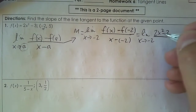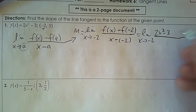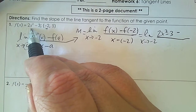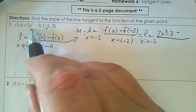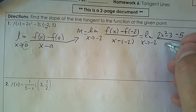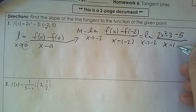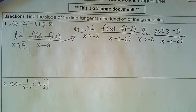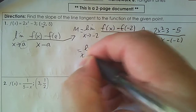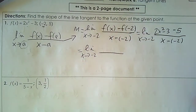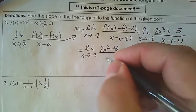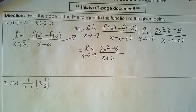This makes the algebra much simpler. Now plug in negative 2: negative 2 squared is 4, times 2 is 8, take away 3, so that's 5. So we're going to subtract 5. In the denominator it's x subtract negative 2. So the limit as x approaches negative 2 has numerator 2x² subtract 8, and denominator x plus 2.